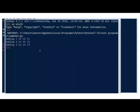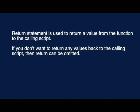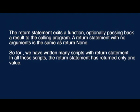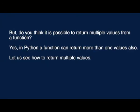In our previous module we discussed the use of the return statement. Return statement is used to return a value from the function to the calling script. If we do not want to return any values, return can be omitted. The return statement exits a function, optionally passing back a result to the calling program. A return statement with no arguments is the same as return None. In all the scripts we wrote, the return statement returned only one value. But is it possible to return multiple values from a function?